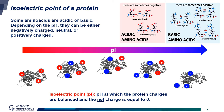This PI value depends on the amino acid composition of the protein and is unique for each protein. As shown in the picture here at the bottom, below the PI value, proteins are overall positively charged, and above the PI value, they are negatively charged. Only at the PI value do they have a net charge of 0.